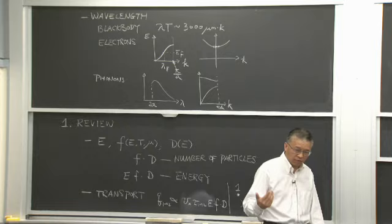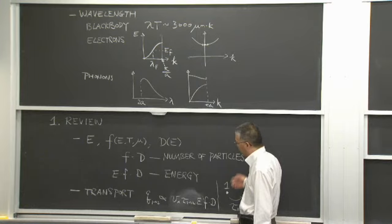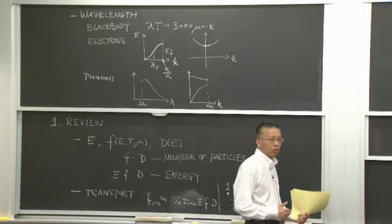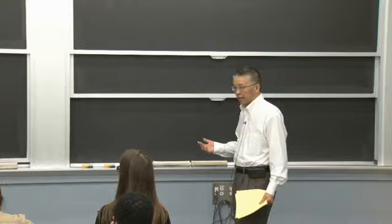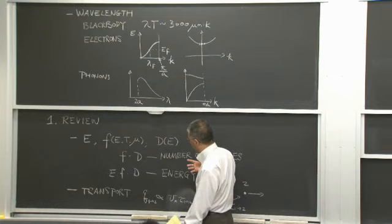With that you can do the counting. f times D gives me the number of particles near that energy per energy interval. If you integrate, that gives you the total number of particles — electrons, phonons. Or if you multiply by the energy of a particle, that gives you the energy. Multiply by charge, it gives you charge density. Multiply by momentum, it gives you momentum. So with that, you can start calculating energy stored, specific heat, et cetera.